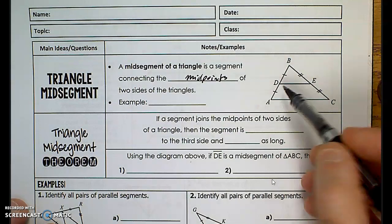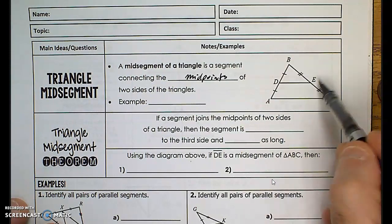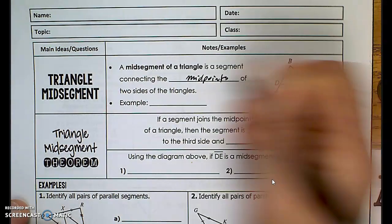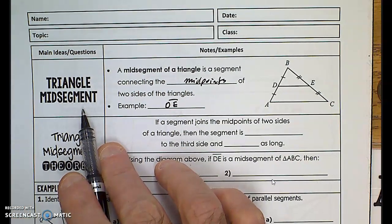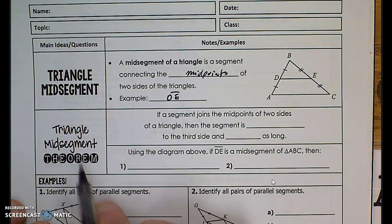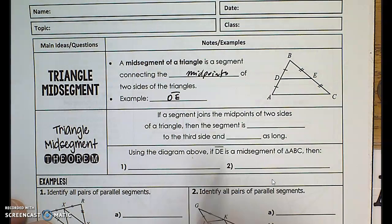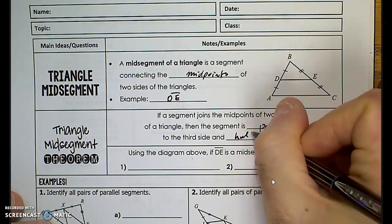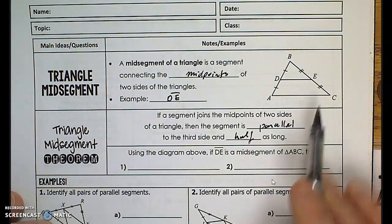I know it's a mid-segment because it connects the midpoint of this side — this is equal to that — and the midpoint of this side, E, with line segment BE being congruent to line segment EC. So our example here would be DE, which is a triangle mid-segment. The triangle mid-segment theorem says if a segment joins the midpoints of two sides of a triangle, then the segment is parallel to the third side and half as long. This segment turns out to be parallel to this side and half as long.